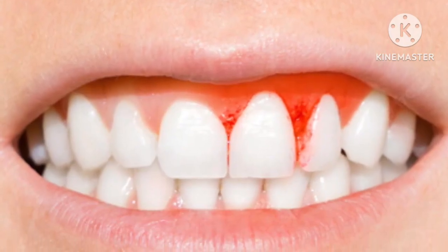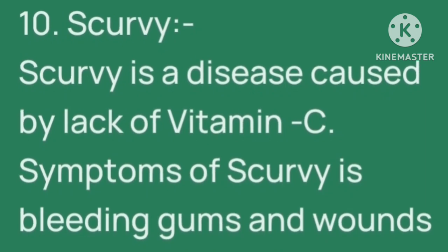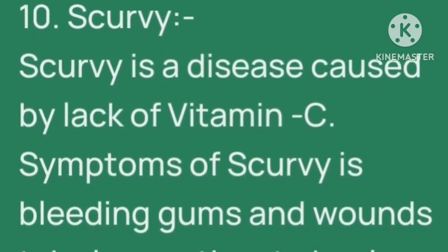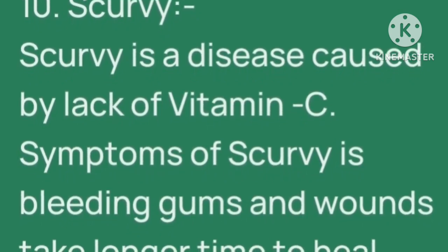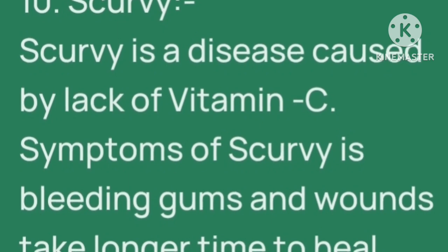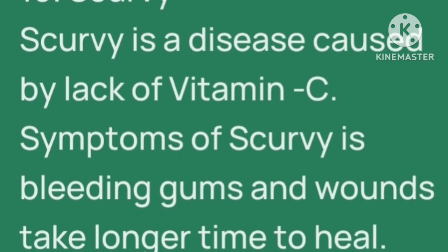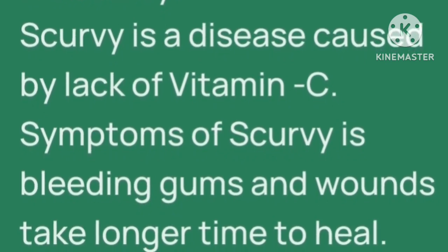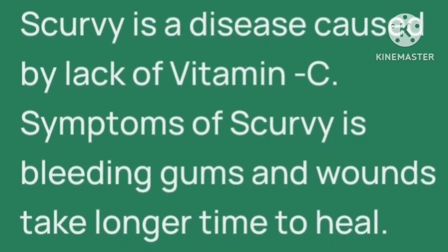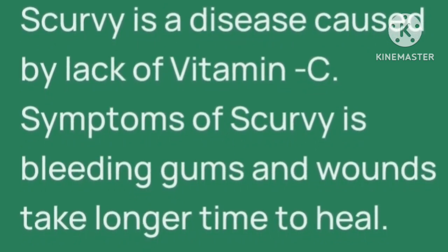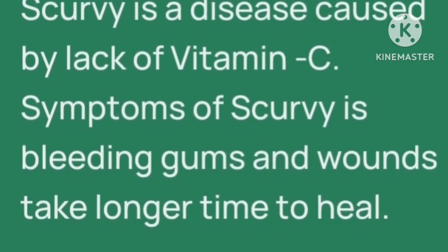Ten number: scurvy. Scurvy is a disease caused by lack of vitamin C. Vitamin C की कमी से होने वाली disease को हम scurvy कहते हैं. Symptoms of scurvy include bleeding gums and bones take longer time to heal. Scurvy disease में मसूड़ों से खून आने लगता है और जो bones घाव हो जाते हैं वो बहुत लंबा time लेते हैं भरने में.